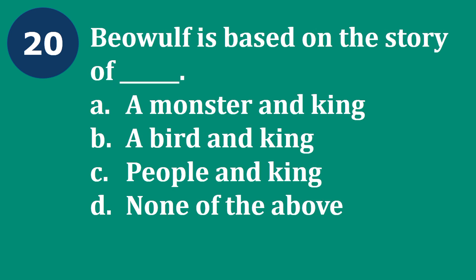Question 20: Beowulf is based on the story of — A. A monster and king, B. A bird and king, C. People and king, D. None of the above. The correct answer is A — A monster and king. Beowulf, considered the national epic of England, is based on a monster and king. There is a monster called Greendale and Beowulf, and there is a battle between the monster and Beowulf.